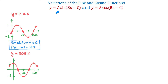Number a causes the function to stretch or to shrink vertically, and we use it to find the amplitude. The formula for finding the amplitude is the absolute value of a. So the amplitude is always represented by a positive number, and it shows the maximum value of the function.